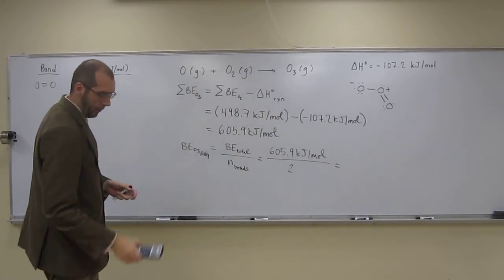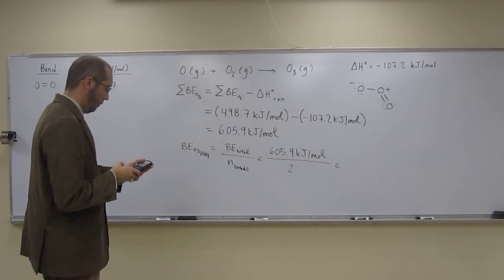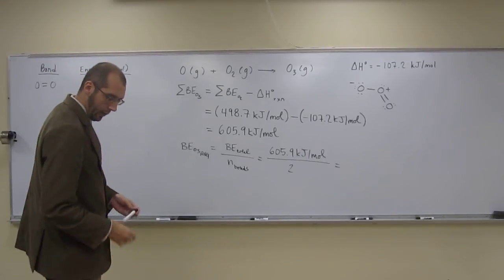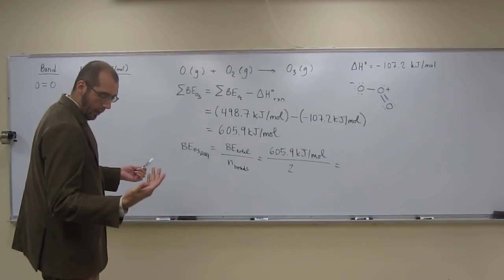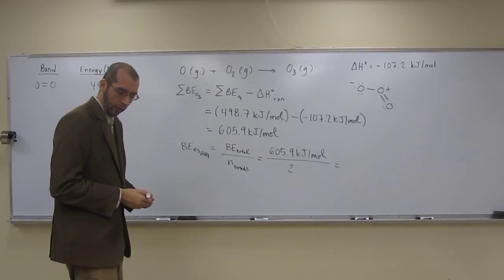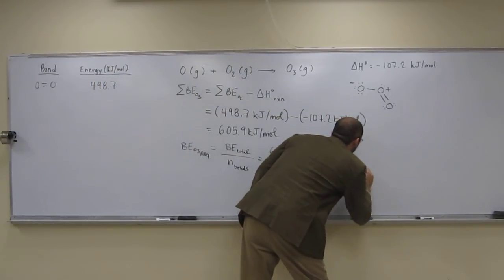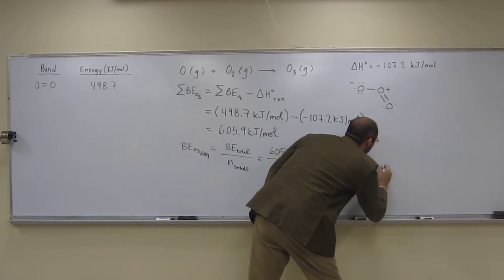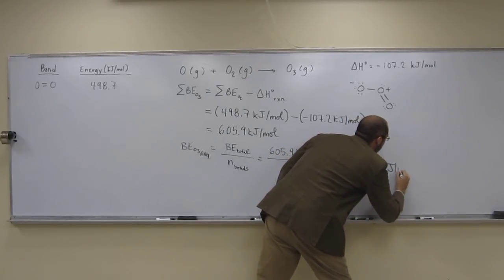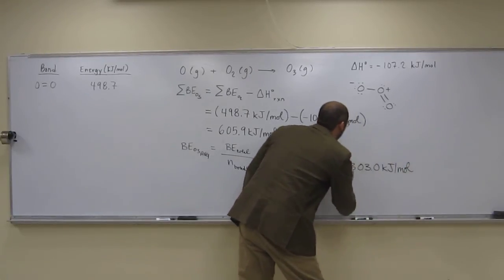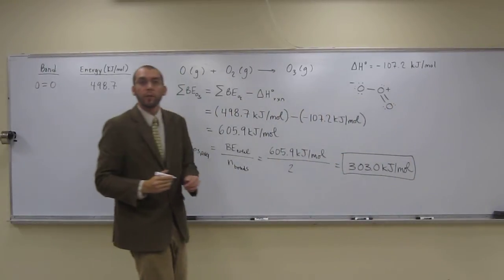So that's going to be 605.9 kilojoules per mole divided by two. So when we do that, we just take that number divided by two, and I get 303.0 kilojoules per mole, or the average bond energy of O3.